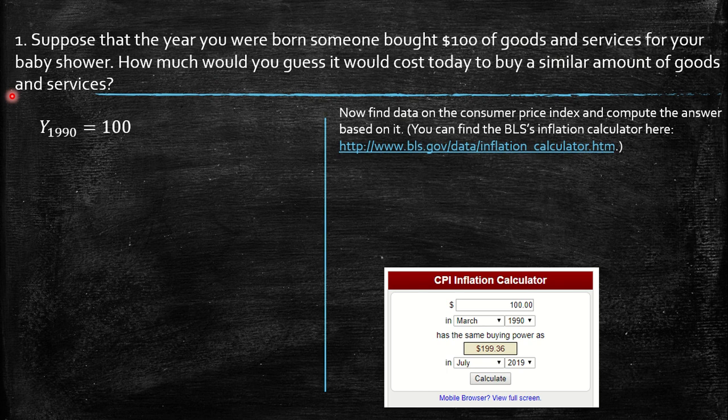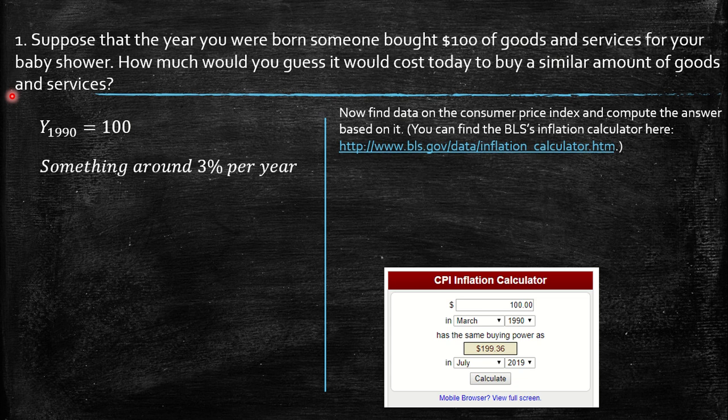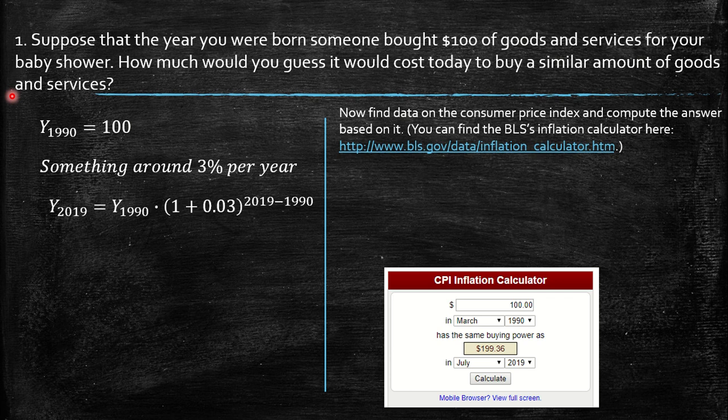So here, this is my born year, 1990. I guess you are around more 2000, I guess. So then it was 100. So I'm going to assume that something around three percent per year, the inflation. So this should be the question.